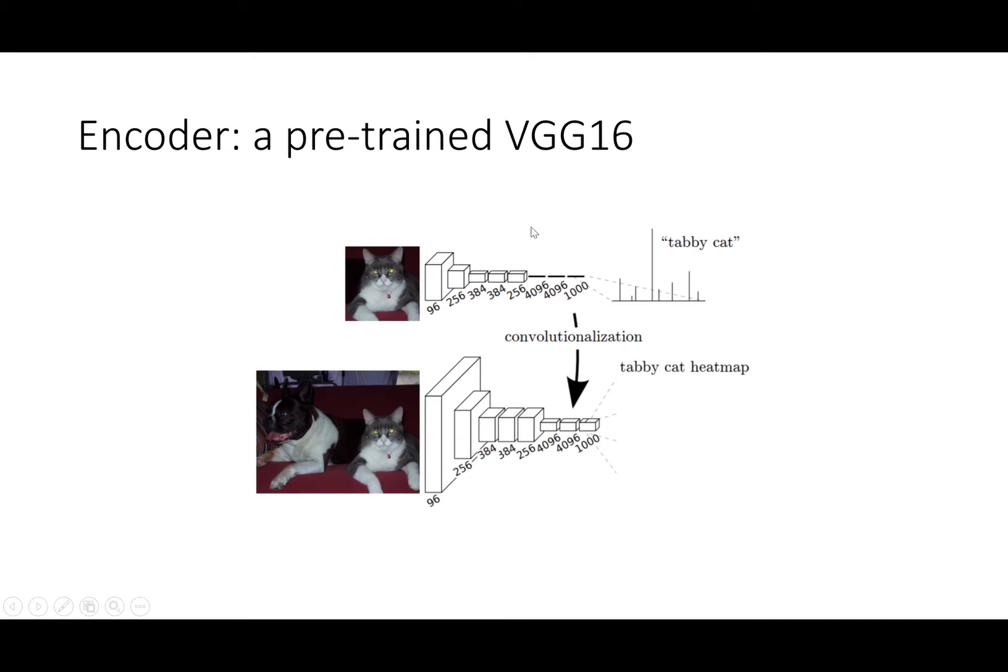The first part is called encoder. Basically, it is just all the pre-trained VGG without the dense layers. As we can see, it can transform the cat image into a heat map of the prediction of this object. It basically stores the information in a very dense vector.